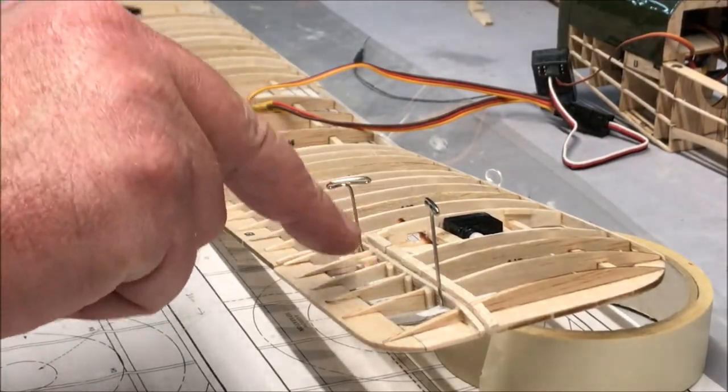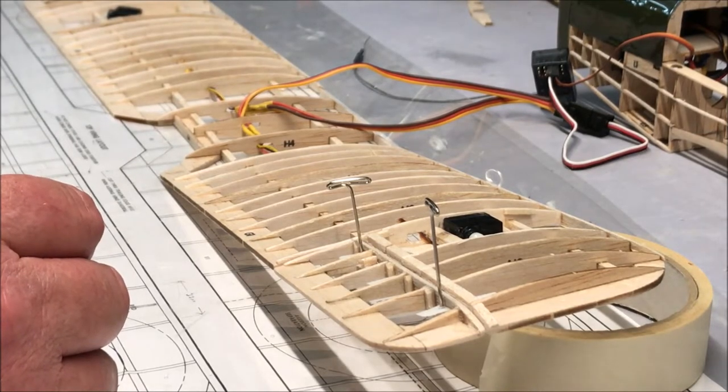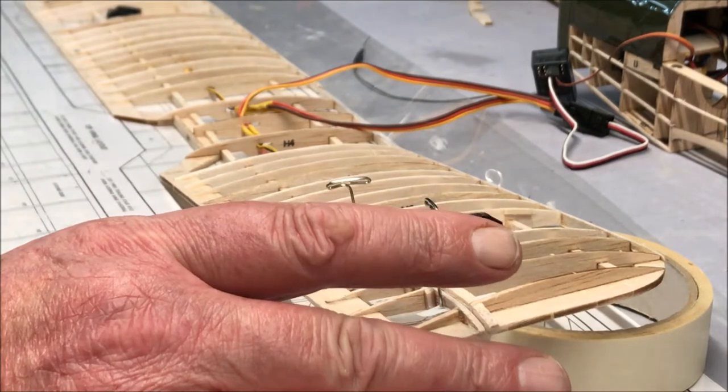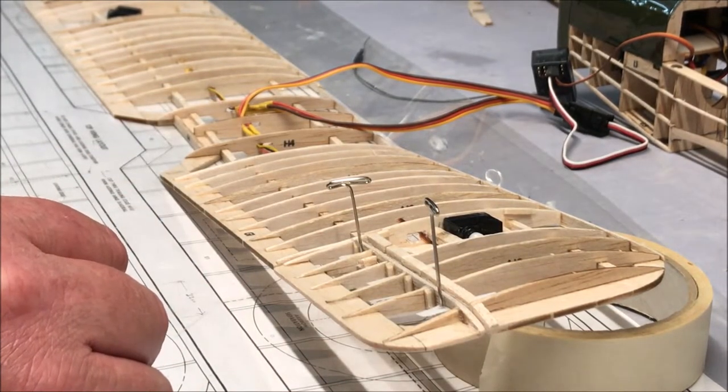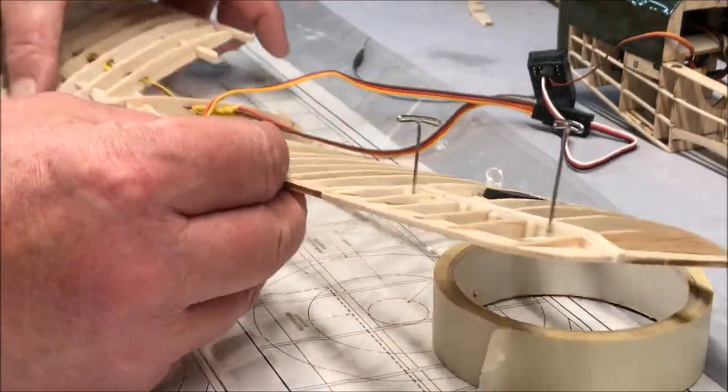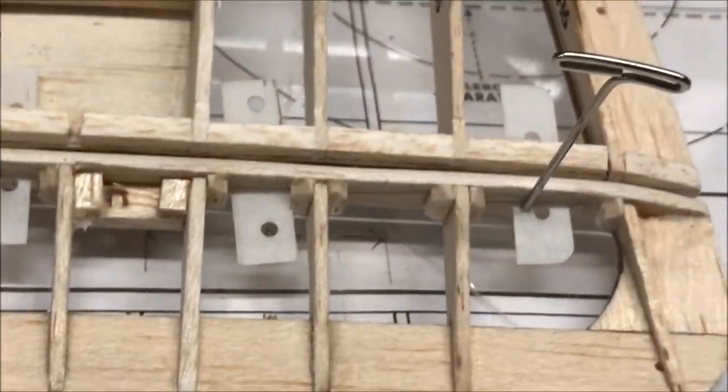Well, the first question is why have I got these two pins in here? The thing is I've not glued this aileron on because I've got adjustments to make with certain things which will become apparent later. So I've glued in the hinges on this side but not on this side, so I can take the aileron off.